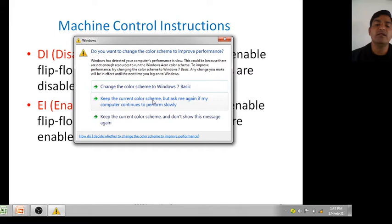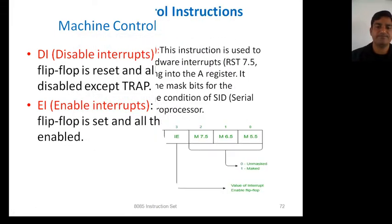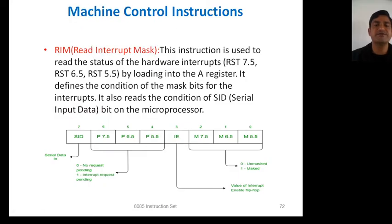Next instruction is EI — Enable Interrupt. The interrupt enable flip-flop is set and all the interrupts are enabled.